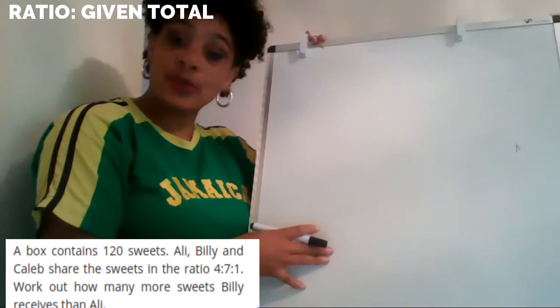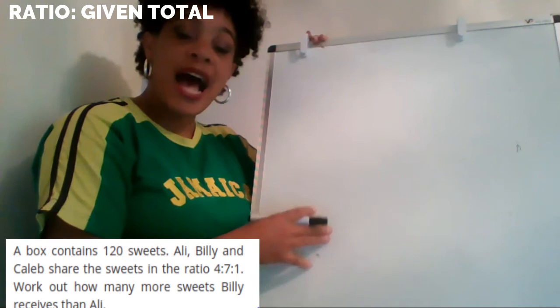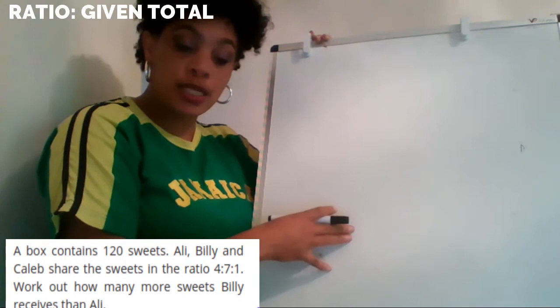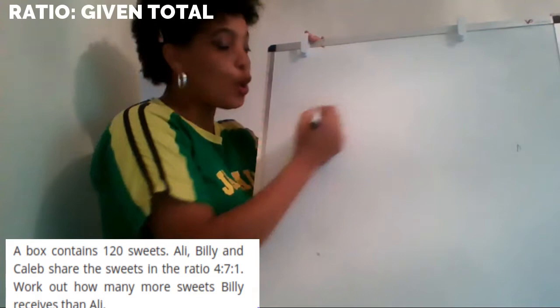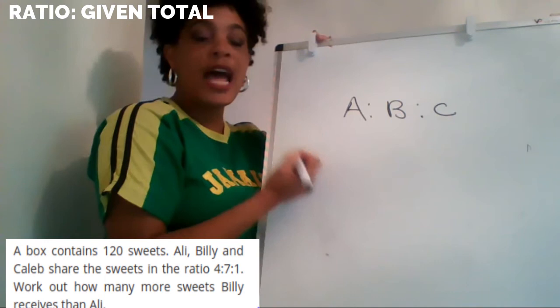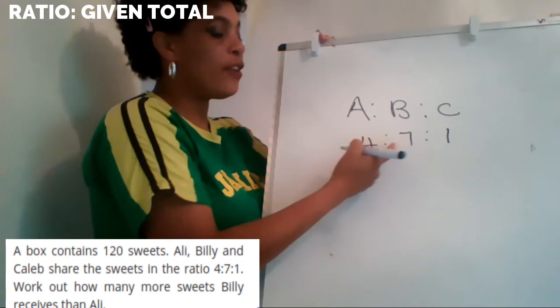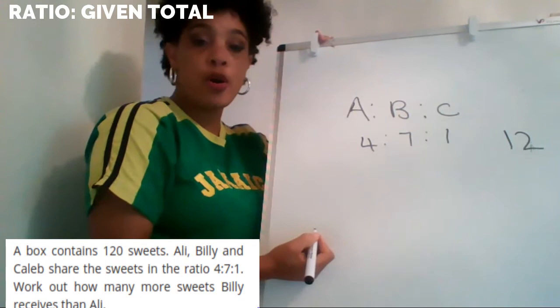The next question says: a box contains 120 sweets. Ali, Billy and Caleb share the sweets in the ratio of four to seven to one. Work out how many more sweets Billy gets than Ali. So we know the order is Ali, Billy and Caleb, sharing 120 sweets in the ratio four to seven to one. Seven plus four is 11, and 11 plus one is 12, so I'm sharing it into 12 parts with 120 sweets total.